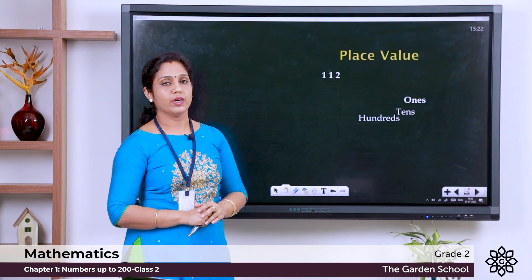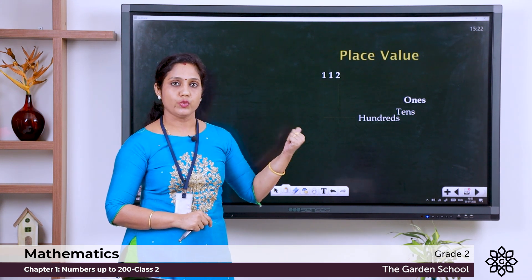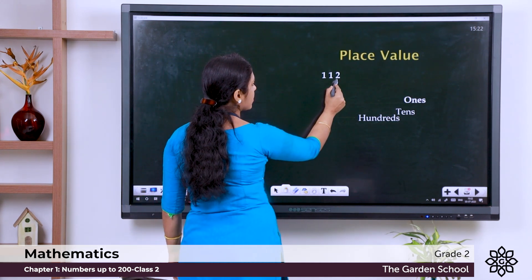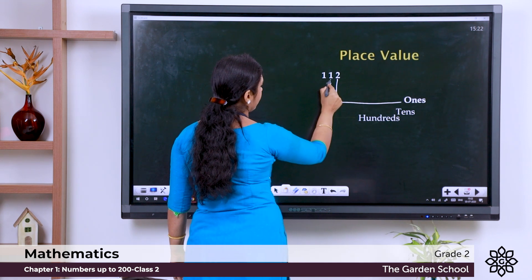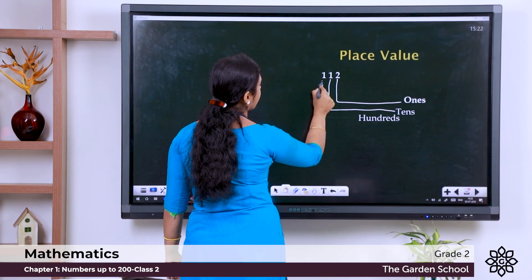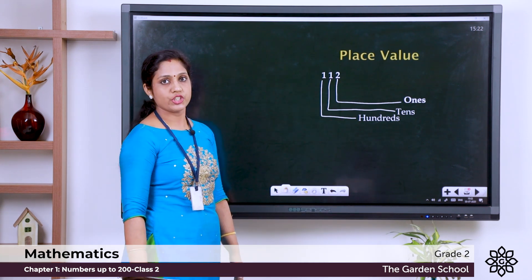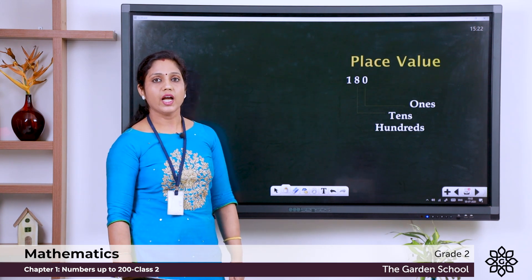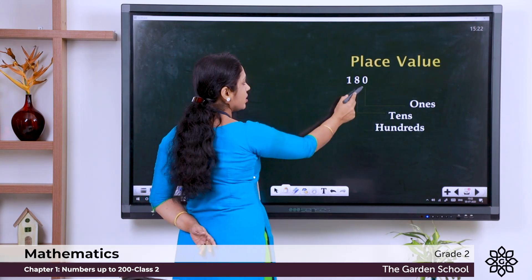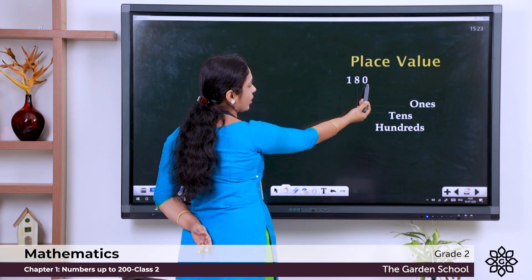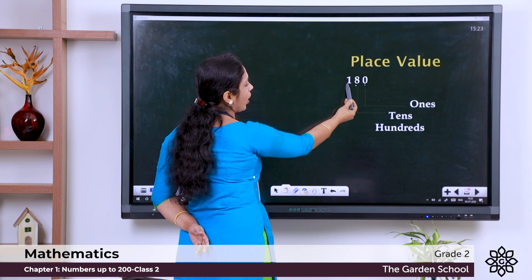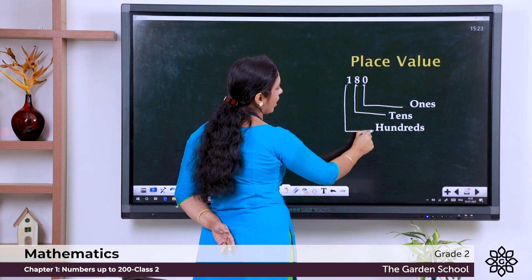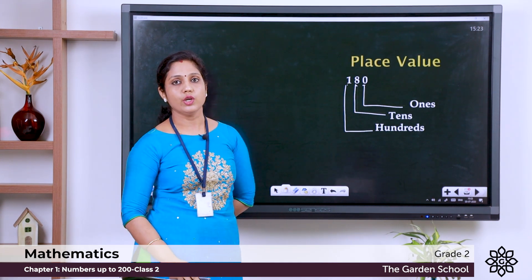Let us move on to three-digit numbers. The number is 112. We check the place value from the right side: 2 comes in the ones position, 1 comes in the tens position, and this 1 comes in the hundreds position. The number 180: starting from the right side, 0 is in the ones place, 8 is in the tens place, and 1 is in the hundreds place. This is how we check the place value of a digit.